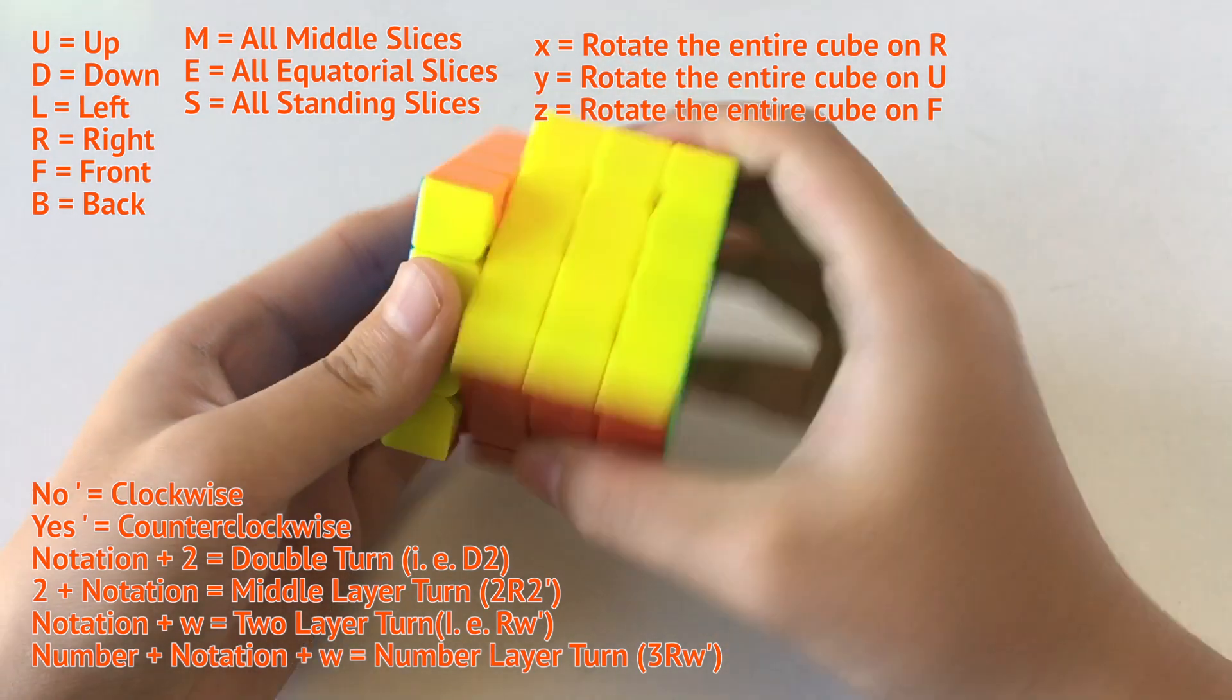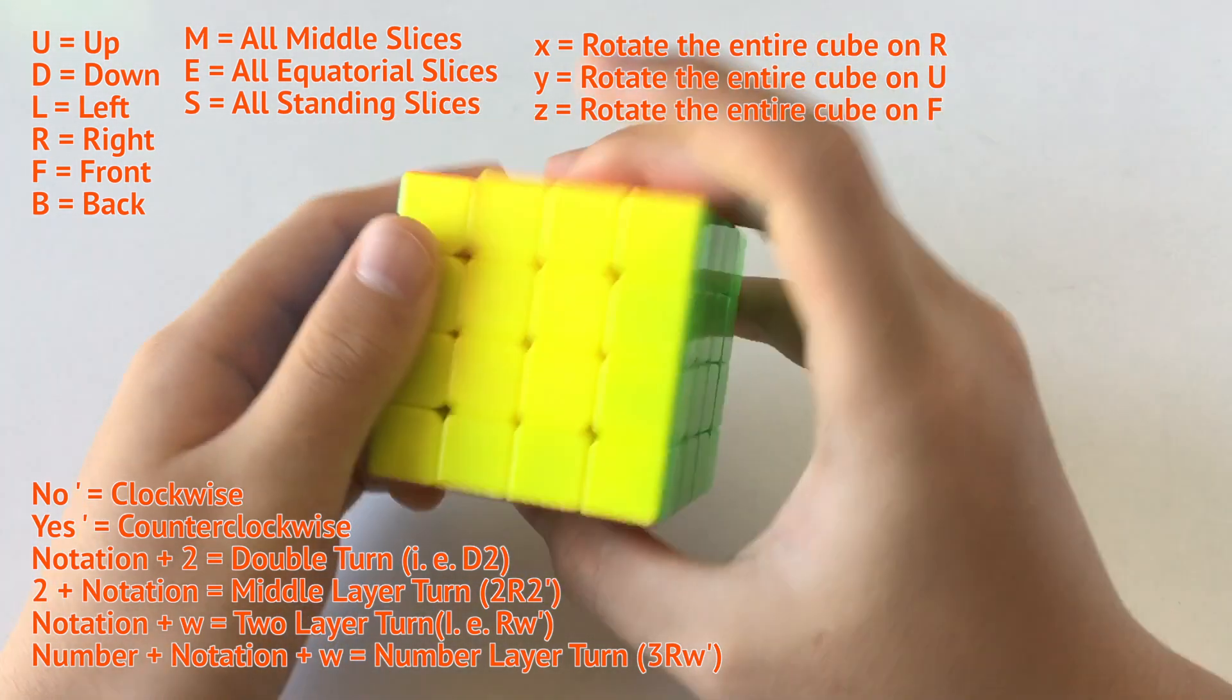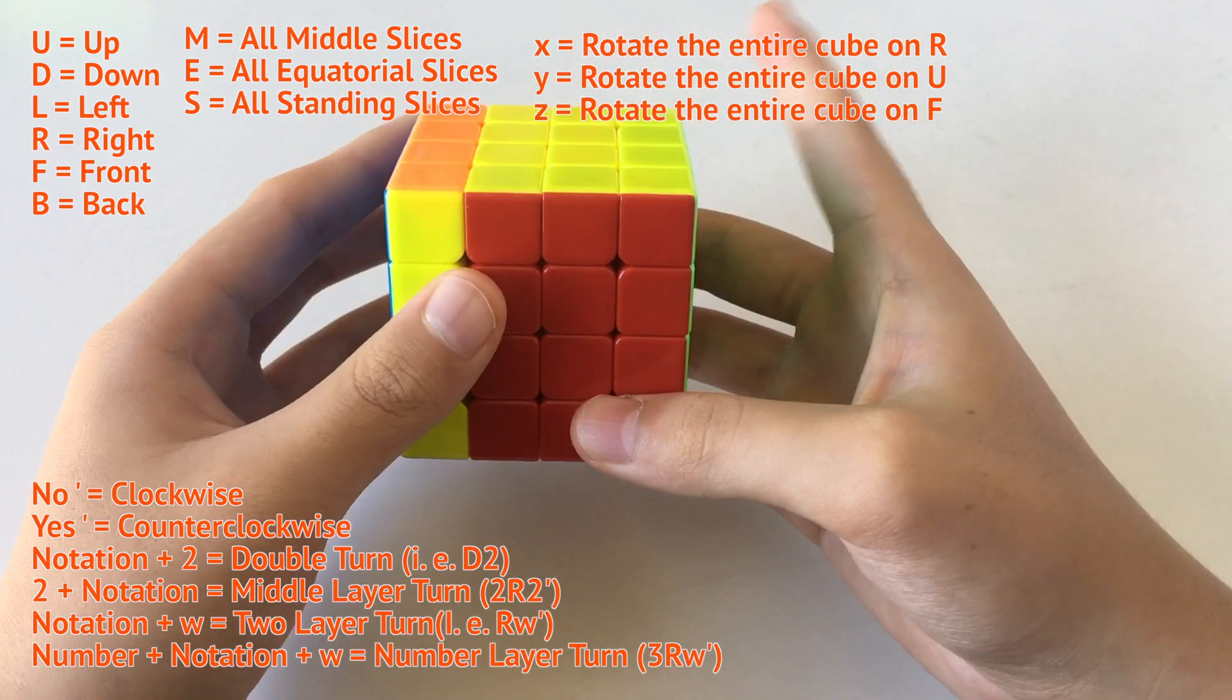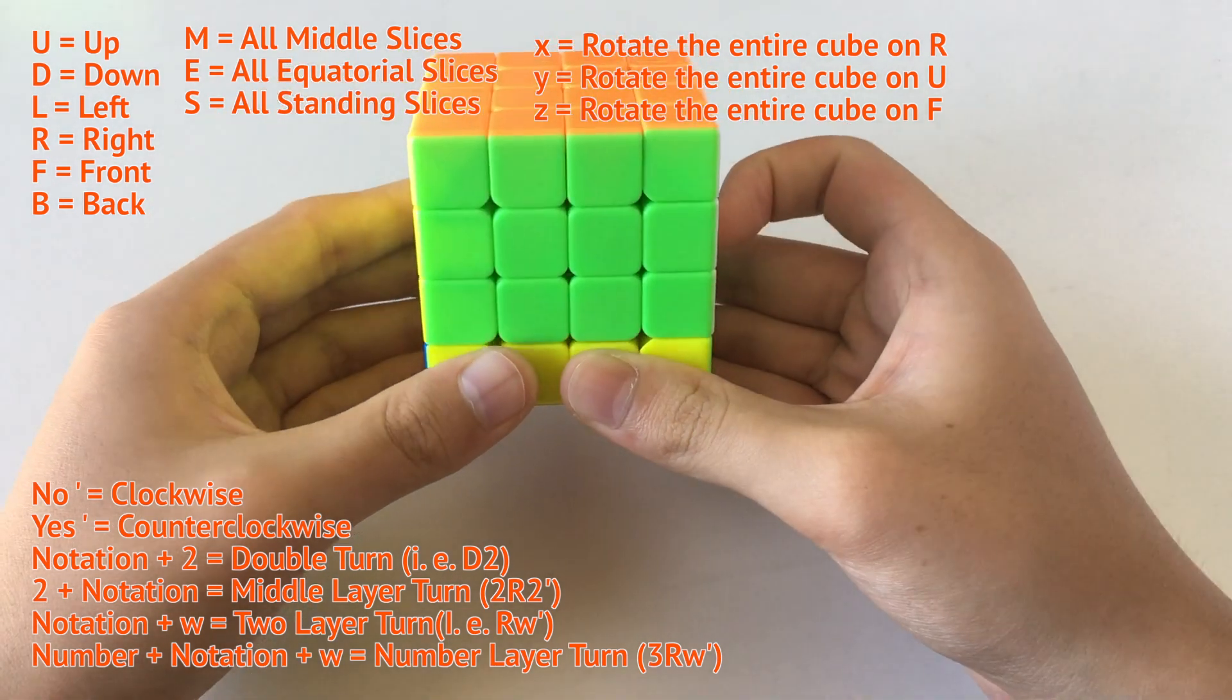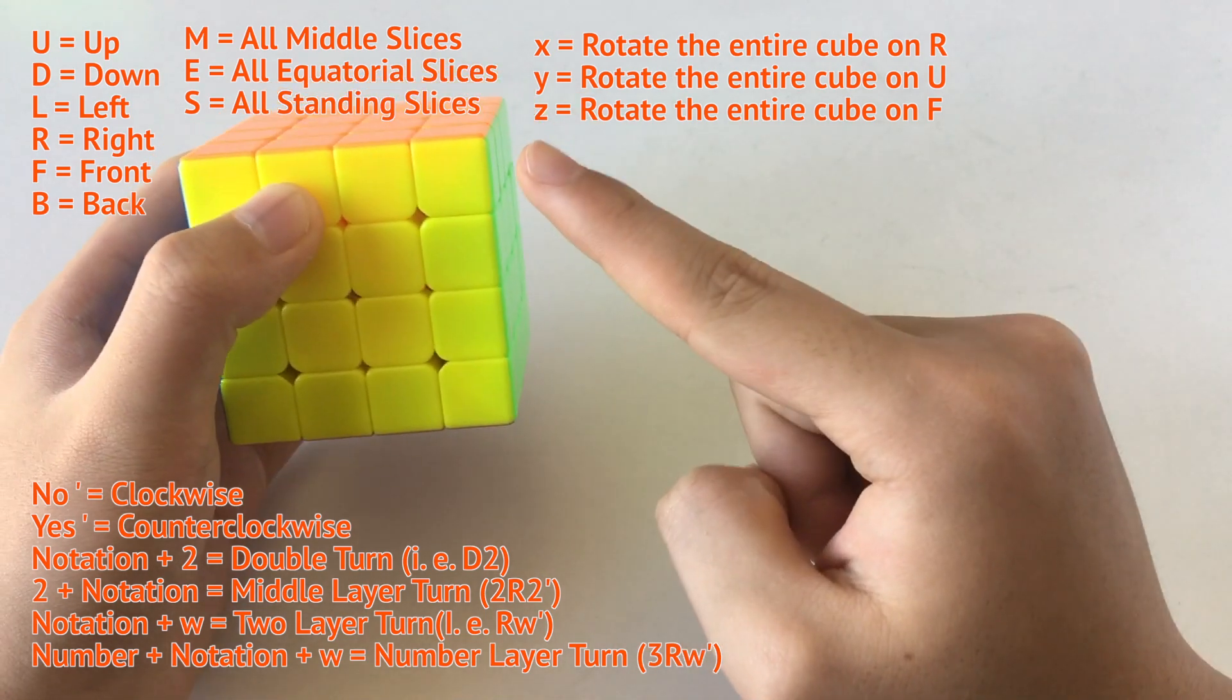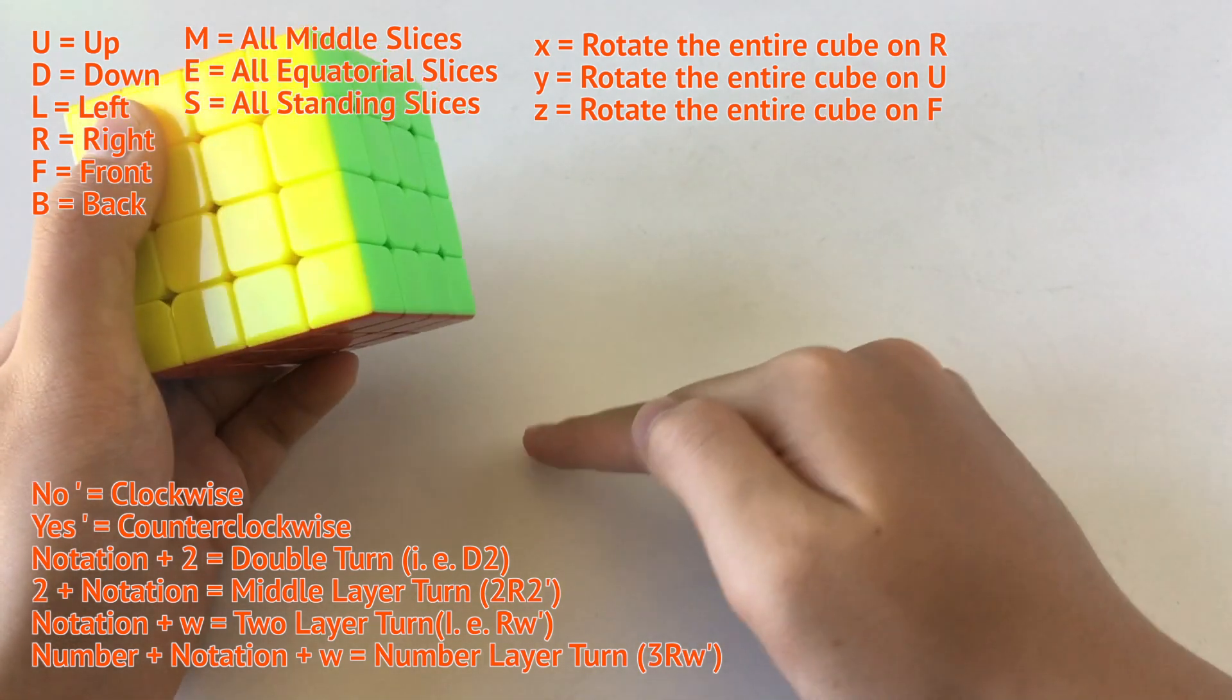So now for the, for example, you need to turn three layers, like that. This will be, for example, three layers up. This will be the three layers down. And then this will be the three layers left. I'm pretty sure it is 3Uw. Or it might be just Uw3.